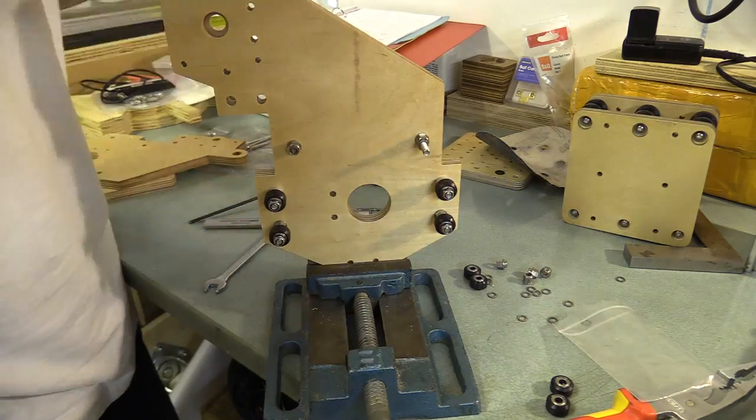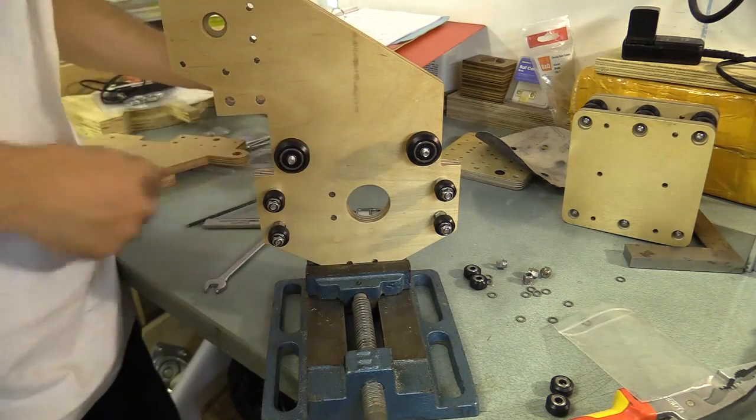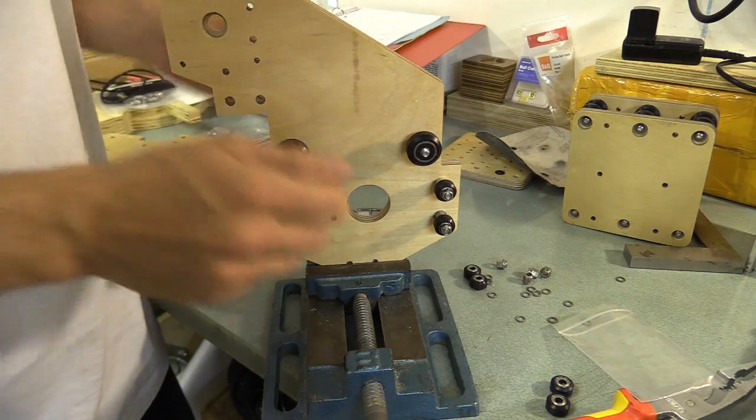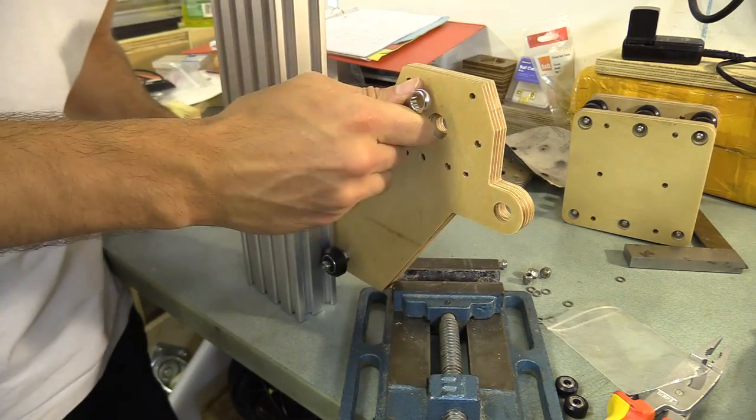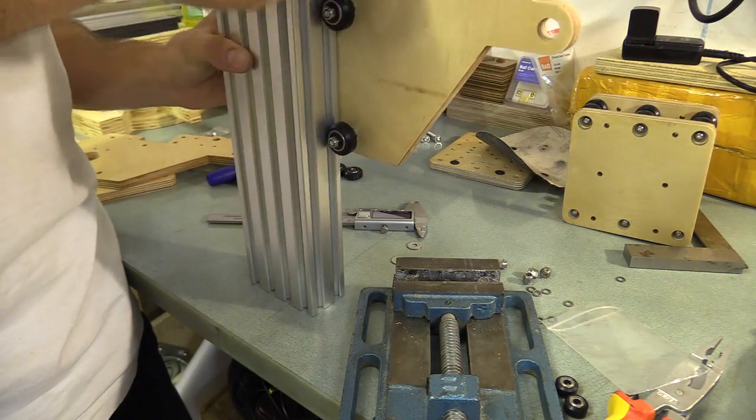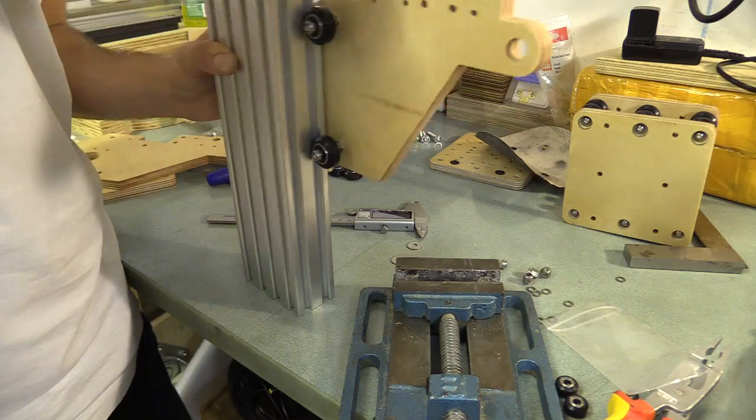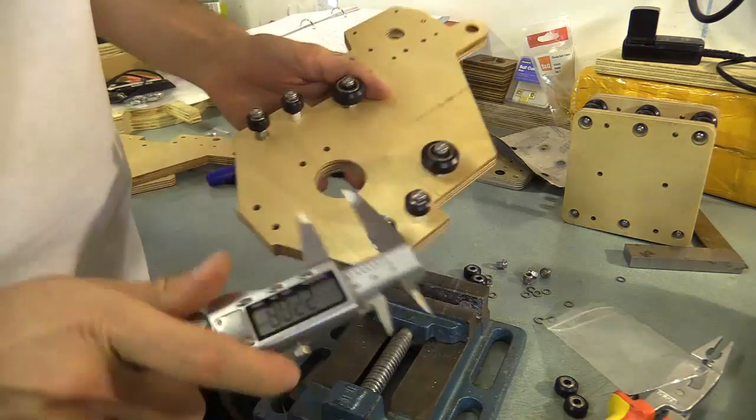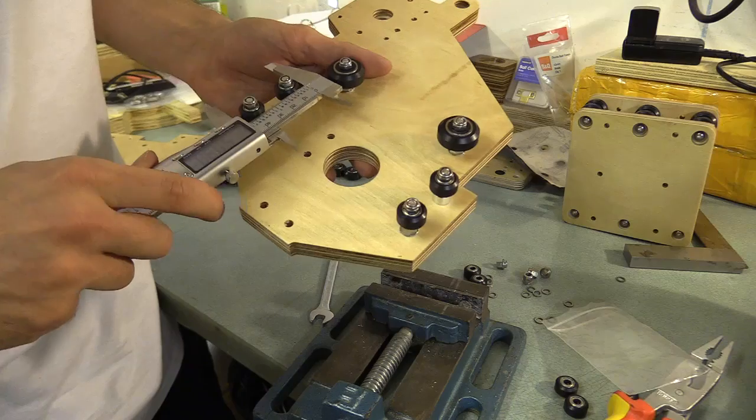The setup is the same with the larger gantry plates, and again once everything was assembled I gently tightened the eccentric spacers against the extrusion and checked the distance between the wheels using the vernier caliper. I think this is going well, especially considering the material I'm making this from.